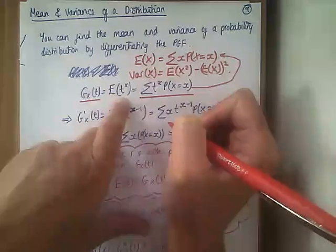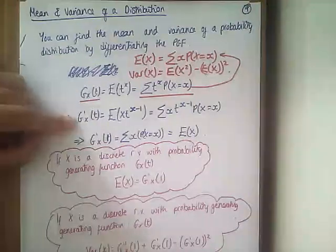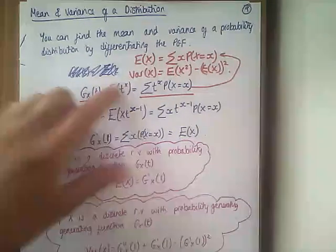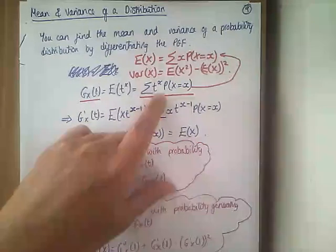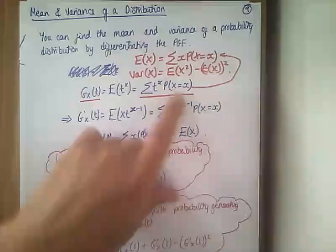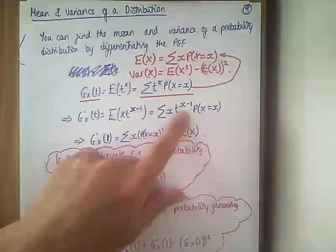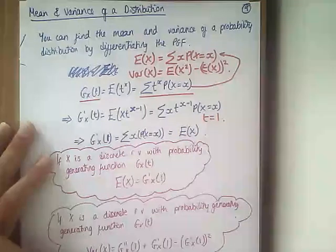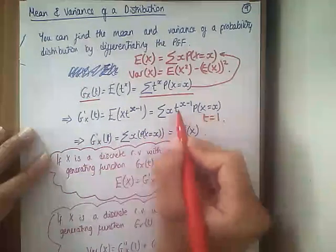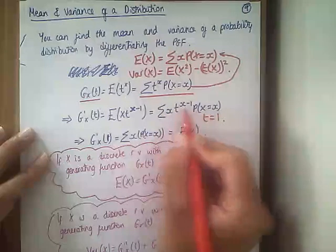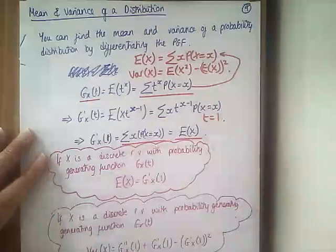If we then differentiate this probability generating function with respect to t, we get g'(t), and we bring the x down as the power, then reduce the power by one. The probability mass function is just a constant here. If we then substitute t=1, this expression becomes the sum of x times P(X=x), which is identical to what we already know about discrete distributions — that is E(X), our mean.